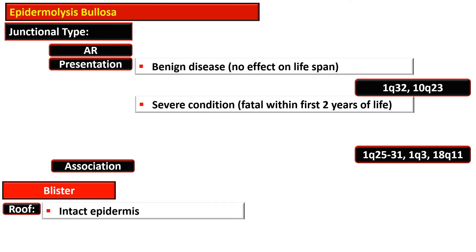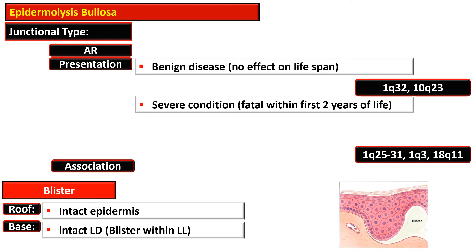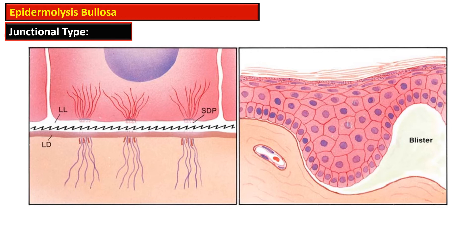In junctional Epidermolysis Bullosa, the blister is formed by an intact epidermis that forms the roof, while the base is formed by the intact lamina densa — the blister itself lies within the lamina lucida. Illustrations show the entire epidermis intact, forming the roof of the blister, with the lamina densa at the base. The cleavage line is present within the lamina lucida, with the subdesmosomal plate above and lamina densa in the lower area forming the base of the blister.